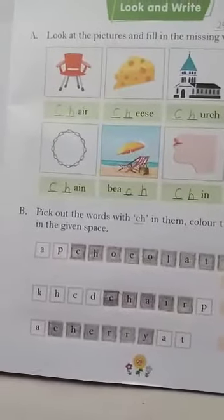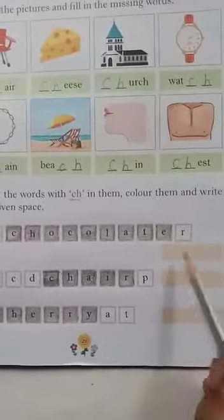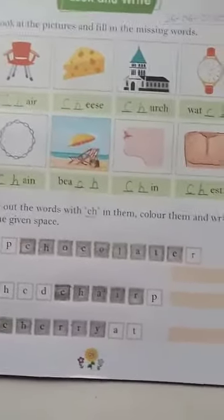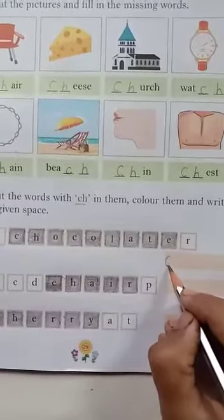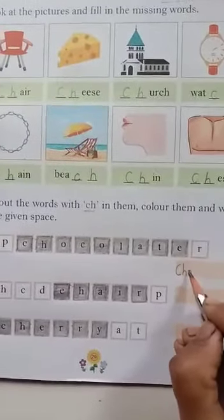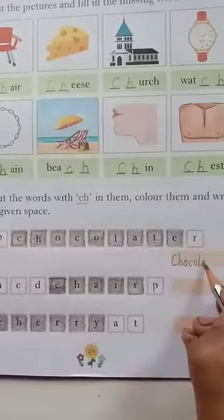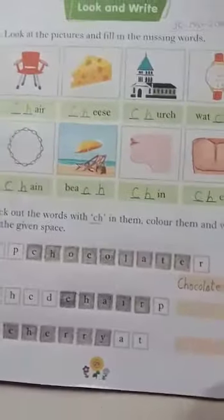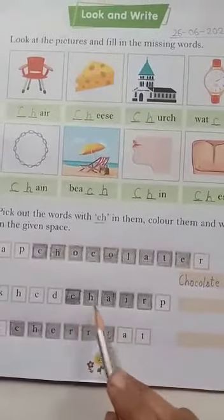Students, you can see the words with 'ch' sound found in this box — color those and write these words here. Okay, like this — C-H-O-C-O-L-A-T-E, chocolate. Okay, now next word.